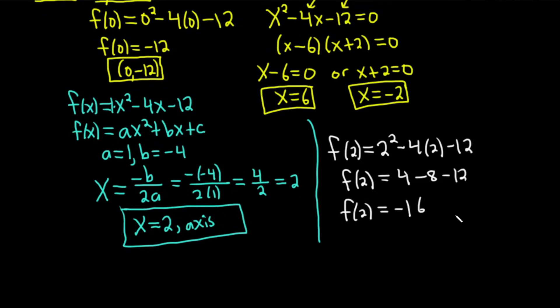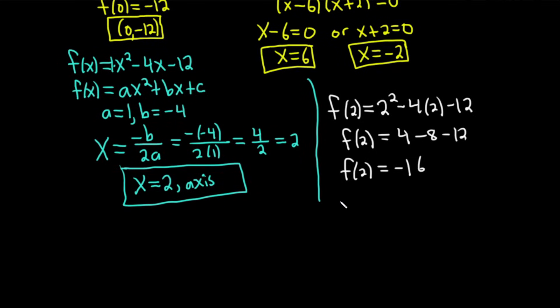So now we have our vertex as an ordered pair. It's going to be, I'm going to write vertex so we have it on the screen. It's going to be (2, -16). That's going to be our vertex right there. Okay. So we've got our axis. We've got our vertex.